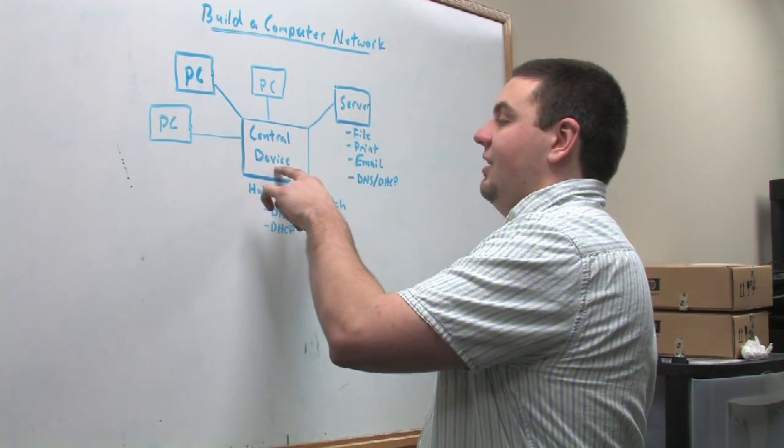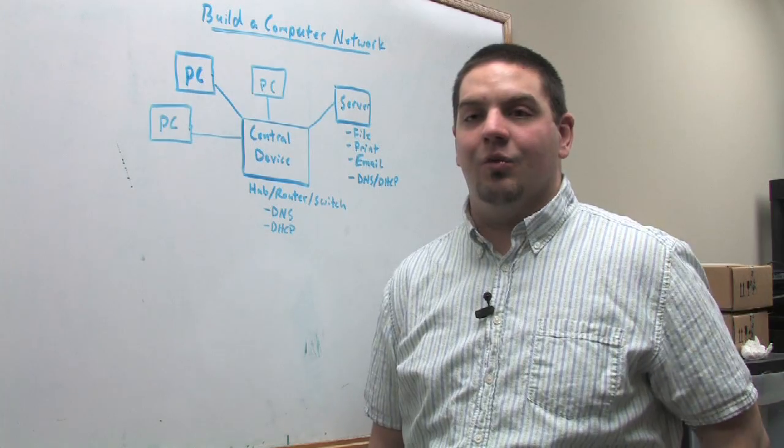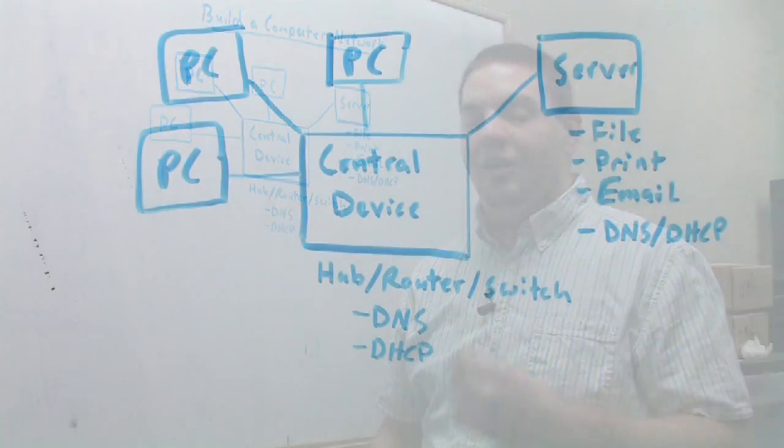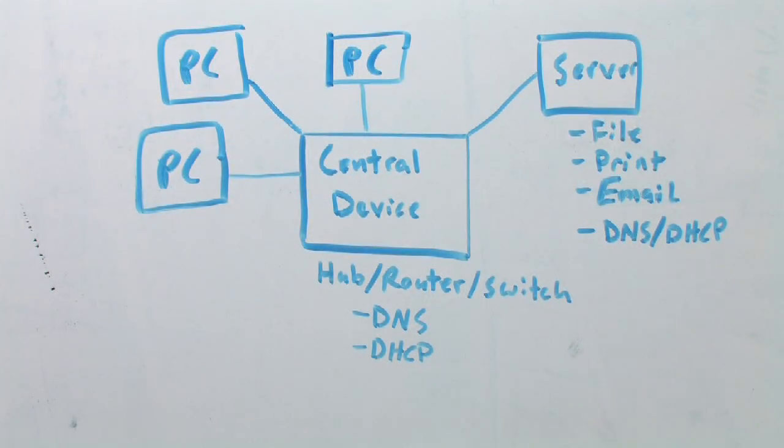One would be an essential device, which would be what everything would communicate through. Depending on the sophistication of the network, you could use either a hub, a switch, or a router.